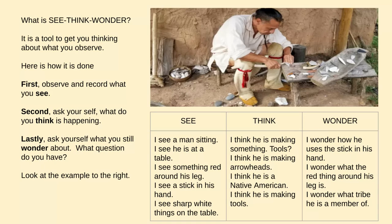First, you observe and record what you see — exactly what you see. So, I see a man sitting. I see he's at a table. I see something red around his leg. I see a stick in his hand. I see sharp white things on the table.